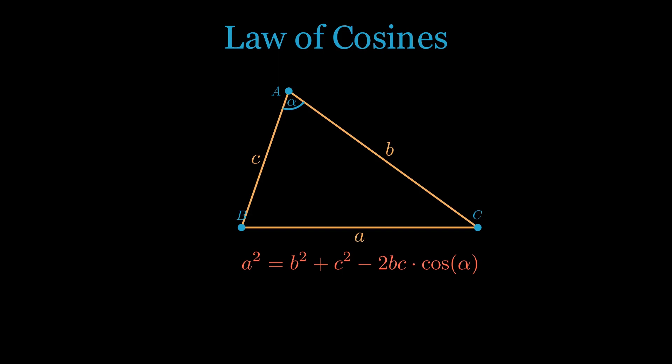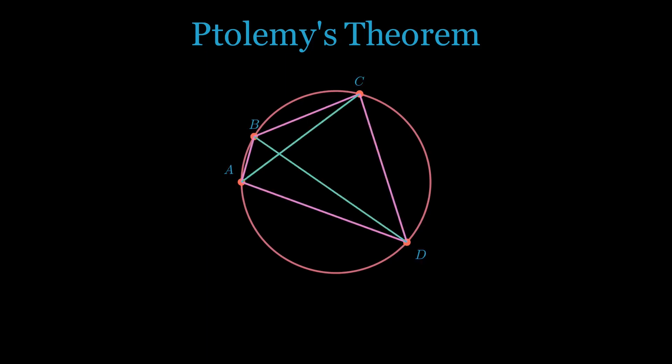The third and most important fact we'll need is called Ptolemy's theorem. It gives us the following relation between the sides and diagonals of a cyclic quadrilateral. There are many proofs of this fact. There's a standard trigonometric proof as well as a very nice inversion proof which you'll find on the numberphile channel. Again, the link is in the description below.